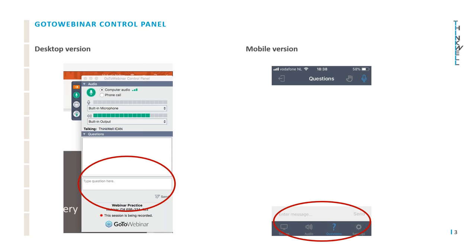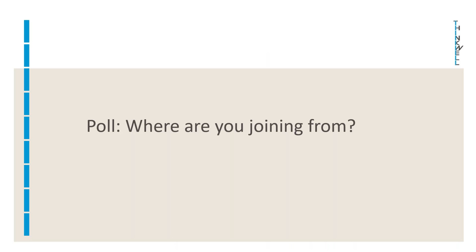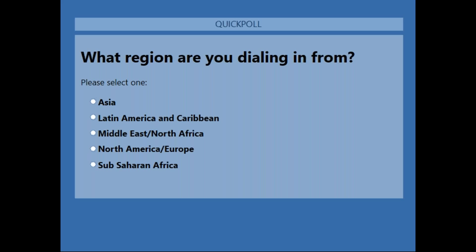We encourage you to submit any questions you may have during the webinar using the questions feature, which is located just below the audio feature on the control panel if you are using the desktop version, or at the bottom of the phone if you're using the mobile version. We will not be using the raise your hand feature. Throughout the presentation, there will be a couple of polls. I've just initiated the first one. Please select your response to the question: where are you joining from?